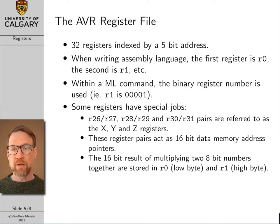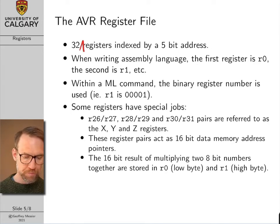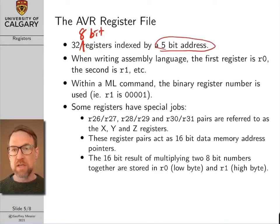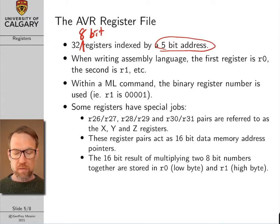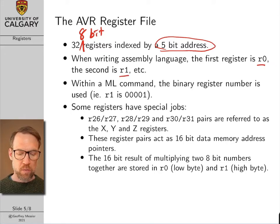Most microprocessors have register files, but we're going to specifically talk about the AVR register file. The AVR register file contains 32 8-bit registers, indexed by a 5-bit address, since 5 bits are needed to address 32 different locations. In assembly language you specify a register using the letter R followed by the register number — so R0 is register zero, R1 is register one, and so on. In binary machine language you just use the 5-bit number for that register.